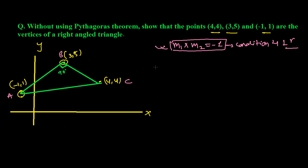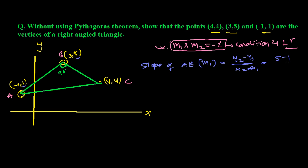We are going to find the slope of all the lines. Slope of AB, let's call it m1. Slope of AB = (y2 - y1) / (x2 - x1), which is the difference of y-coordinates over the difference of x-coordinates. So it is (5 - 1) / (3 - (-1)) = 4 / 4 = 1. So m1 = 1.